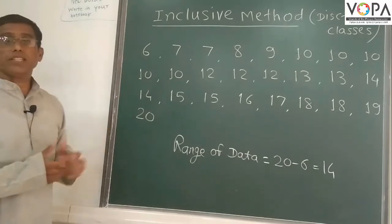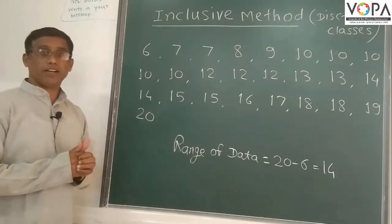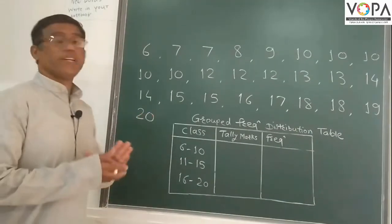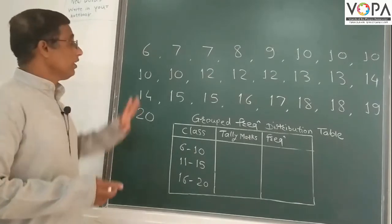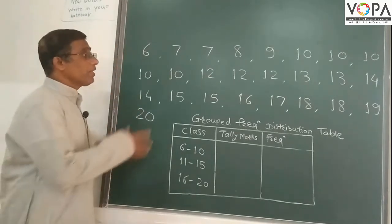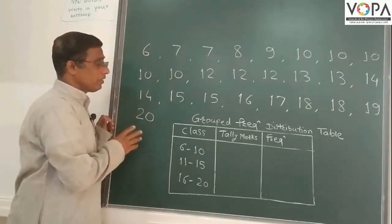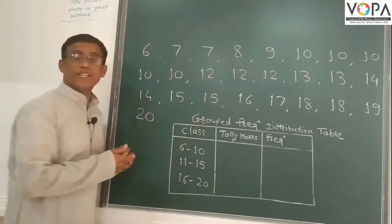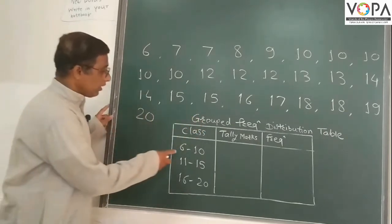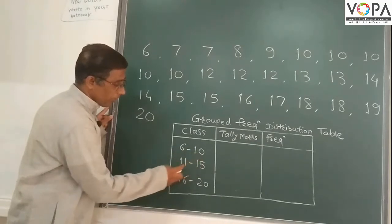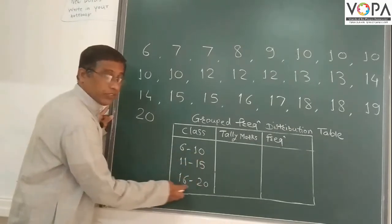Such type of information is called as primary data. Now we take group frequency distribution table. From the given information, we have to make a group frequency distribution table. Class 6 to 10, 11 to 15, 16 to 20.